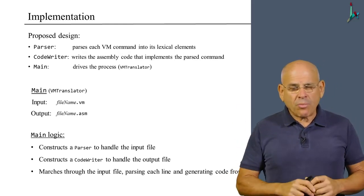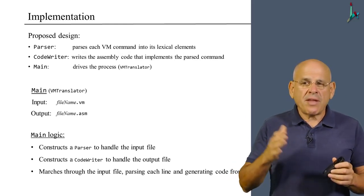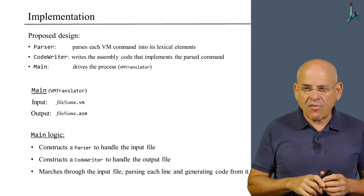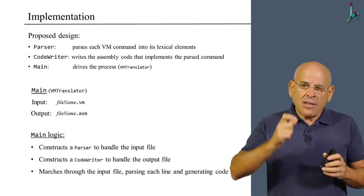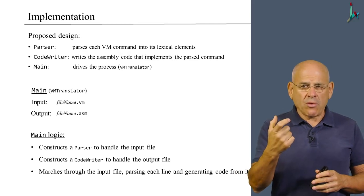And then, once we have these two objects set up, we can march through the input file, through filename.vm, and handle each row in this file separately.